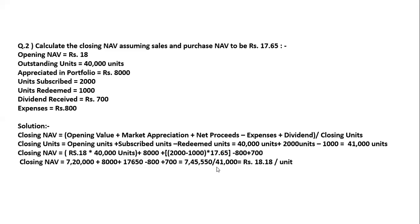The closing units are calculated as: opening units 40,000 plus subscribed units 2,000 minus redeemed units 1,000 equals 41,000 closing units. The market opened at 9:15 with 40,000 units outstanding. During the day, 2,000 units were purchased and 1,000 units were sold — so 40,000 + 2,000 − 1,000 = 41,000 closing units.